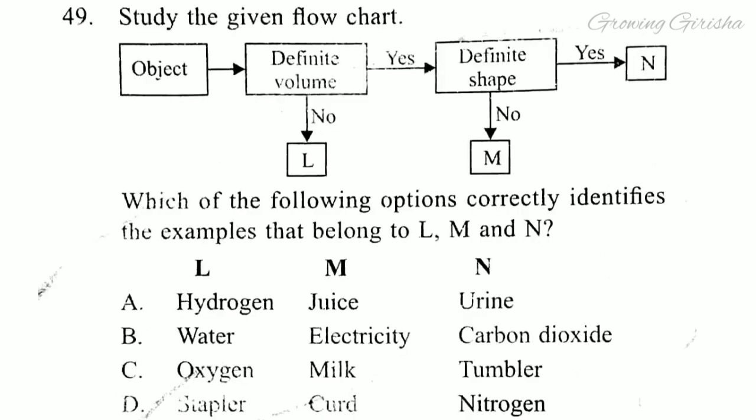Question 49. Study the given flow chart. Which of the following options correctly identifies the examples that belong to L, M, and N? Answer is option C: Oxygen, milk, tumbler.